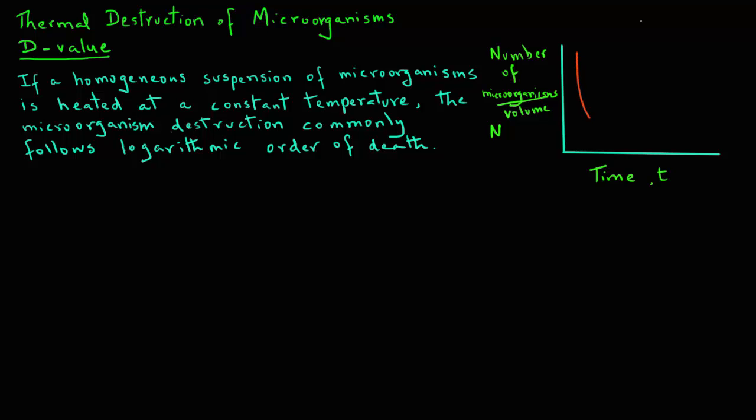If we plot the number of microorganisms in this unit volume when it is heated at a constant temperature, we will obtain an exponential plot as shown in this diagram. Note that this is an exponential decrease, and we also call it a survivor curve, because the points on this curve represent survivors at any time when that suspension is being heated at a constant temperature.